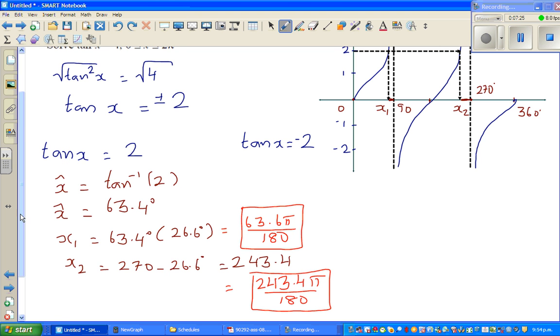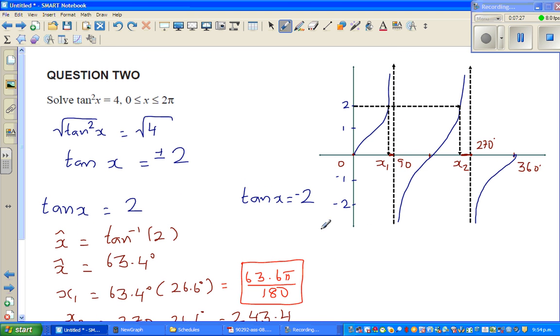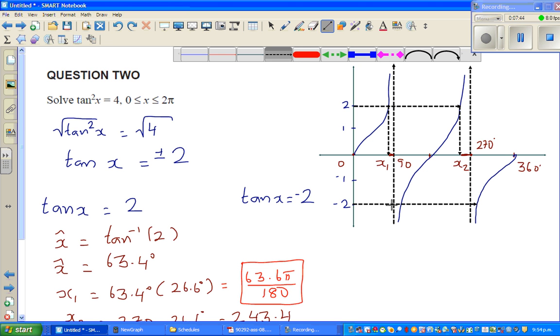Let me also find the other two. For this, again I'll have to draw. Here the question is, for this part, when is your tan x negative 2? These are the two angles. This is negative 2 at this point and at this point.